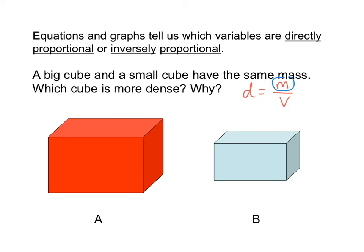Cube A has the larger volume, so that means cube A has the smaller density, because density and volume are inversely proportional. So cube B is more dense because smaller volume means larger density, keeping mass the same.